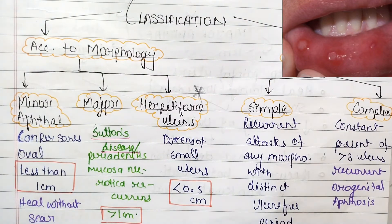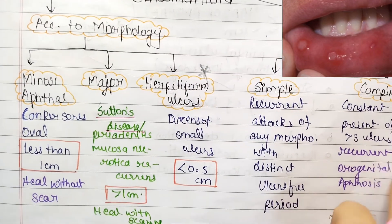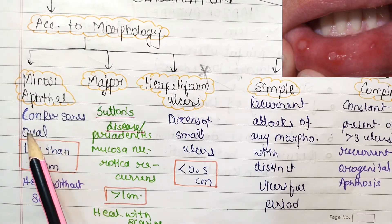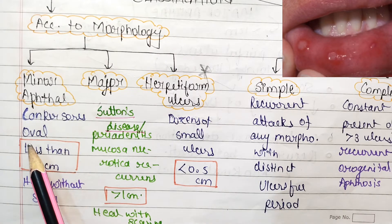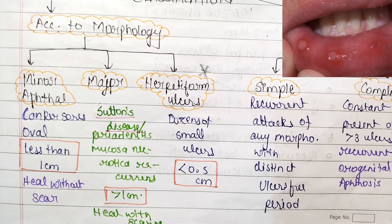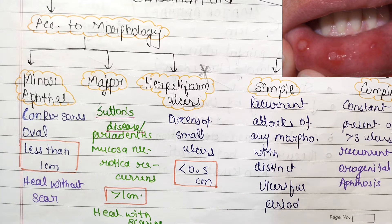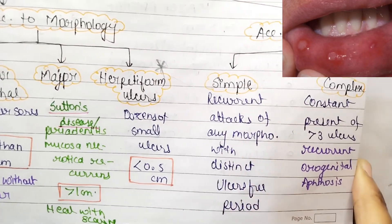In minor aphthae there are canker sores — the ulcers are oval and they heal without scarring. In major aphthae the ulcers are more than one centimeter and they heal with scarring, leaving scar tissue behind.